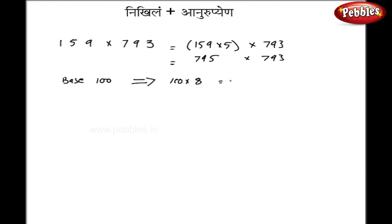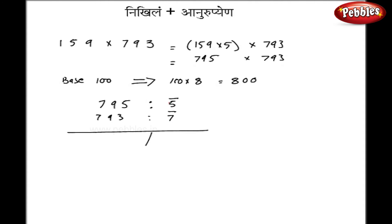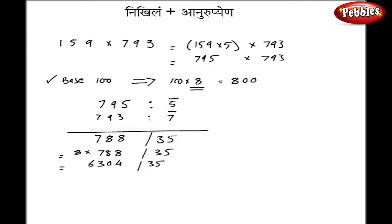If my base is 100, then I can manipulate it to 100 multiplied by 8, that is 800. Now the rest of the calculations are the same. I get 795 minus 800, that is minus 5, and 793 minus 800 is minus 7. So my right hand side becomes 35 and the left hand side becomes 795 minus 7, which is 788. Now I have to multiply the left hand side by 8 as I manipulated the base. So 8 into 788 gives 6304, and the right hand side is 35.